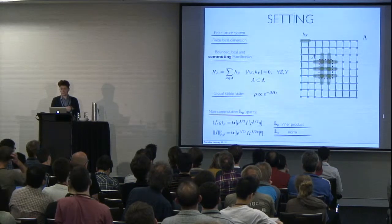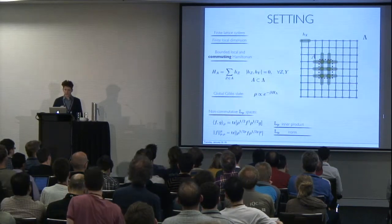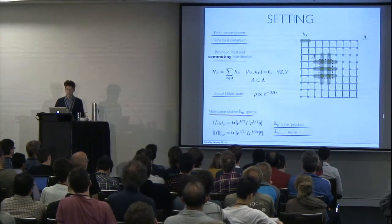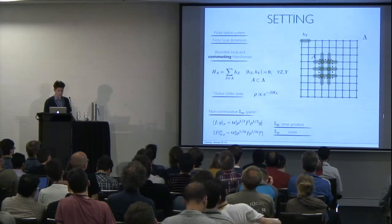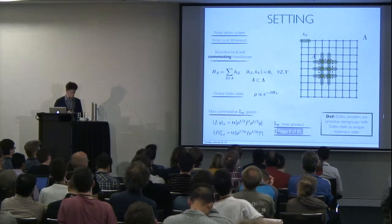and the norm which is also weighted by the Gibbs state. These non-commutative LP spaces have nice properties as well as triangle inequality, Hölder's inequality, and they seem to be the right framework for analyzing these problems.